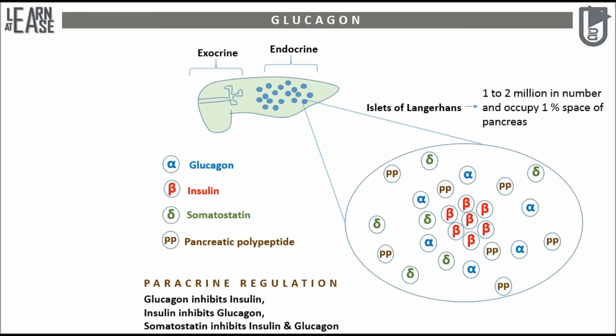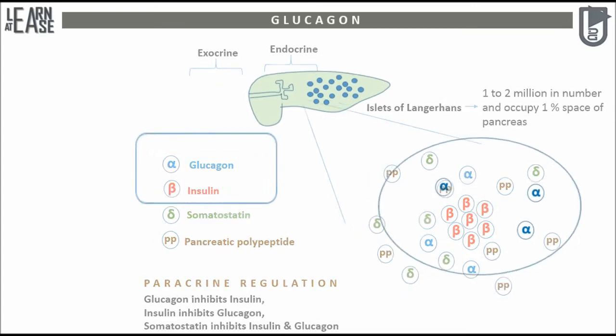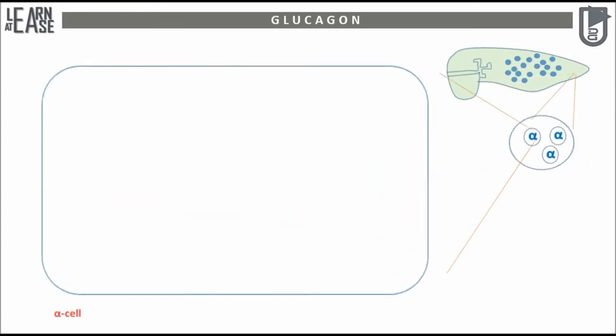Before proceeding further, you can pause the video to understand the arrangement of various cells in the islets of Langerhans. Now we will focus only on alpha cells to understand the production of glucagon. The alpha cell of islets of Langerhans is shown here.